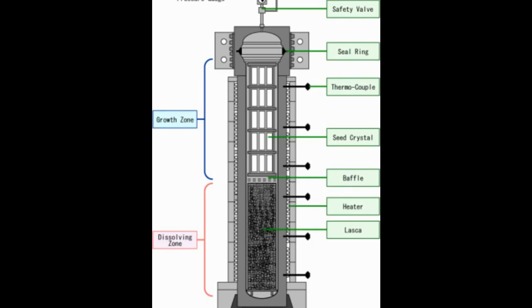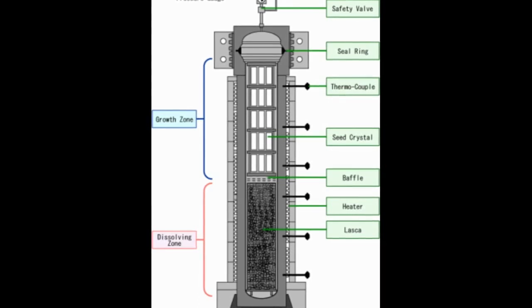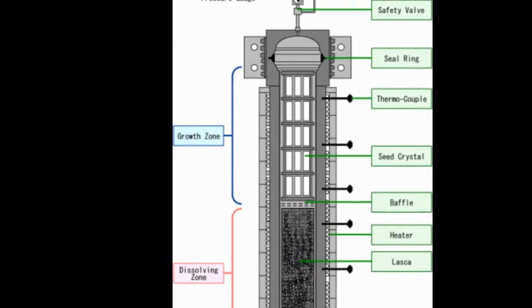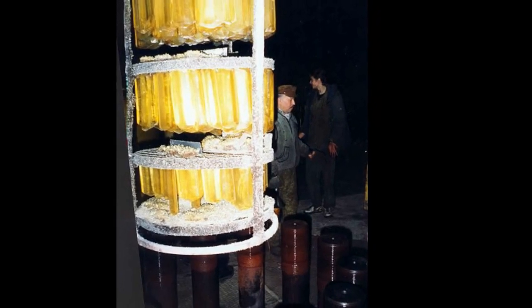This is the high-pressure autoclave, really a big pressure cooker, that is used to grow the quartz crystals. At the bottom of the autoclave is just crushed ordinary quartz. In the upper half of the autoclave are the seed crystals. The apparatus is filled with a solution of water and potassium hydroxide and heated to a temperature of 450 degrees, which produces about 15,000 pounds per square inch of pressure. The entire assembly is cooked for up to eight months, and when it's finished, these are what the finished crystals can look like.